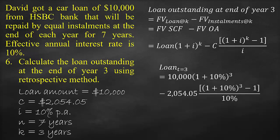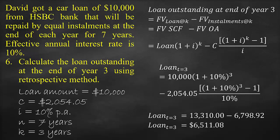So our formula is: $10,000 multiplied by (1 + 10%) to the power of 3 years, minus $2,054.05 multiplied by [(1 + 10%) to the power of 3, minus 1], all divided by 10%. This gives us 13,310 minus 6,798.92, which equals $6,511.08.